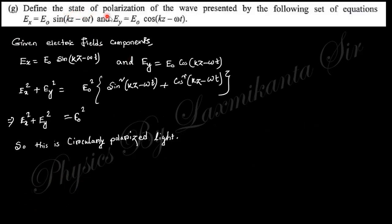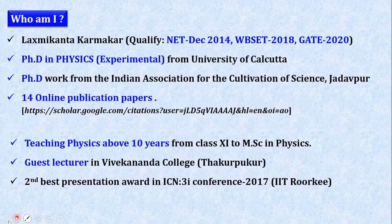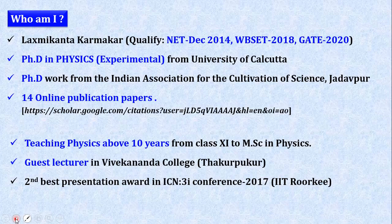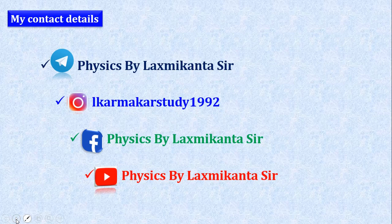Next: define the state of polarization of the wave presented by the following set of equations. Ex and Ey are given. What type of polarization happens here? If you take Ex² + Ey² you will get this equals 1, so this is the equation of a circle, so this is circularly polarized light. I think this is clear about question number 1. It is completed here. In the next class we will discuss question number 2 and 3 also. Take care, we'll be in the next class as soon as possible. Thank you.